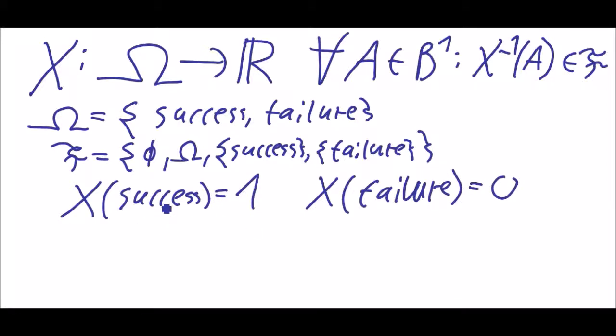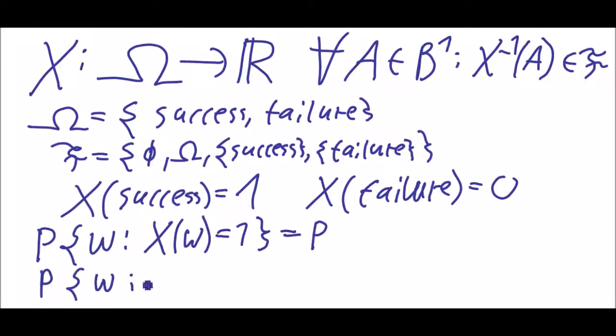Now we have the probabilities. The probability of success is the same as the probability of the omegas with X of omega is 1, which is p. And the probability of the omegas with X of omega is 0 is 1 minus p.